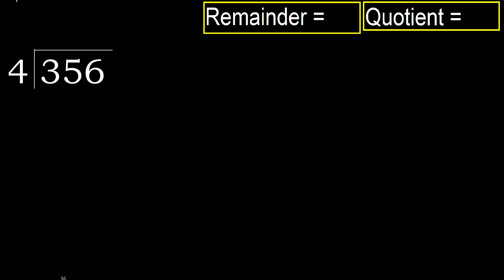356 divided by 4. 3 is less than 4, therefore move to the next digit. 35 is not less than 4, therefore work with 35.